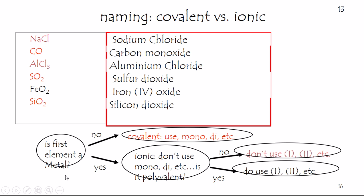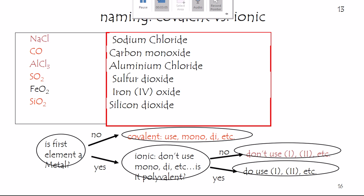If you're into flow charts, here's how you do it. Look to see if there's a metal present. If there is, you do not want to use the prefixes. If the answer is no, you do use the mono-di prefixes, and you're done. Now, if you are finding that this is ionic, you better watch out for those polyvalents — and in fact, I think most of them are. Group one and two are the big exceptions. So consider whether you want to use the Roman numerals in the center, and then name your substance. This is naming substances.